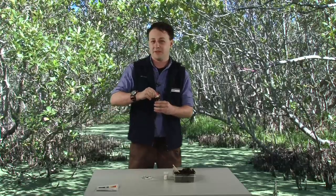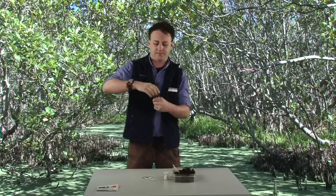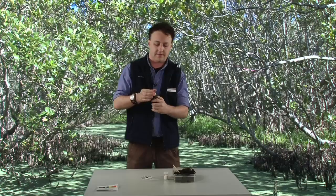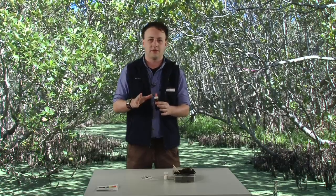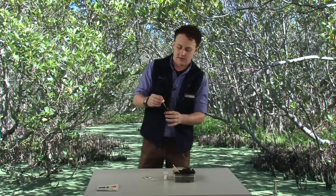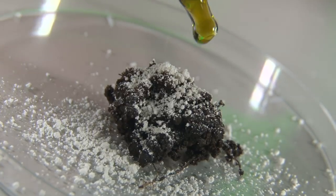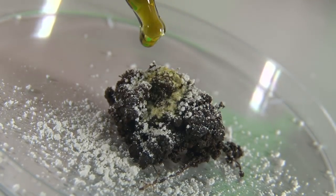Then we have our indicator and we don't need much of this, just two or three drops. You want to be nice and careful with this when dealing with chemicals. You want to make sure there's no spillage or anything like that, especially to avoid contaminating your actual sample. So just one, two, three drops.